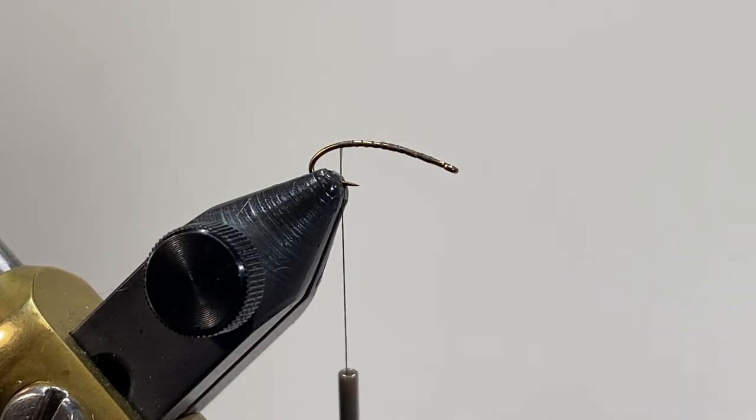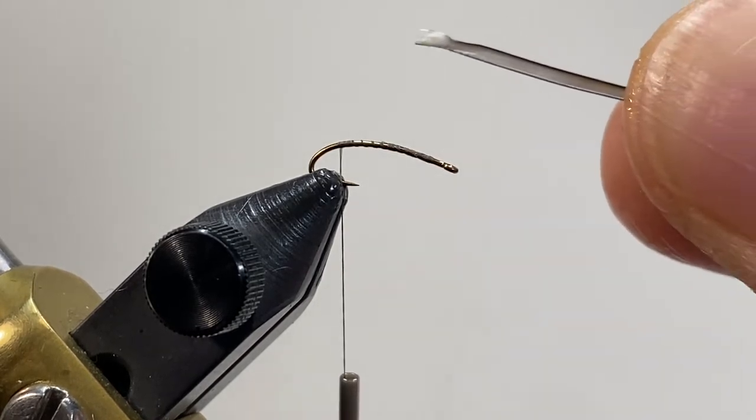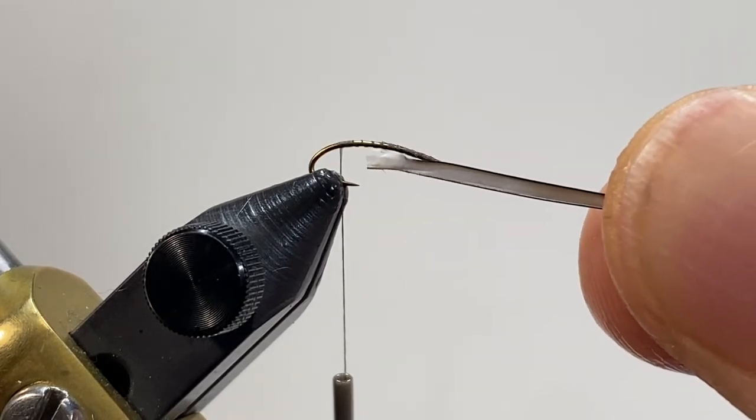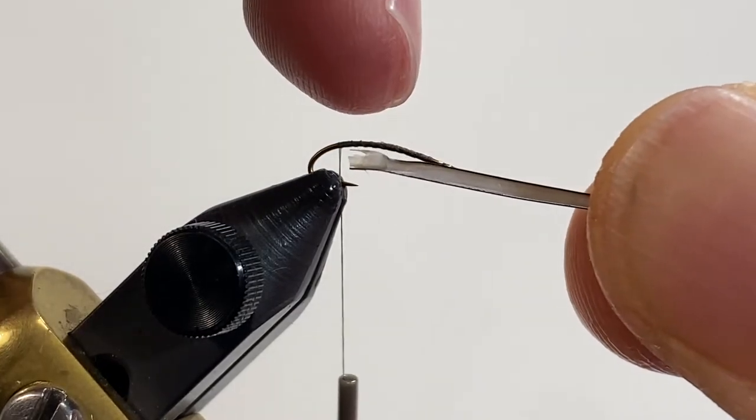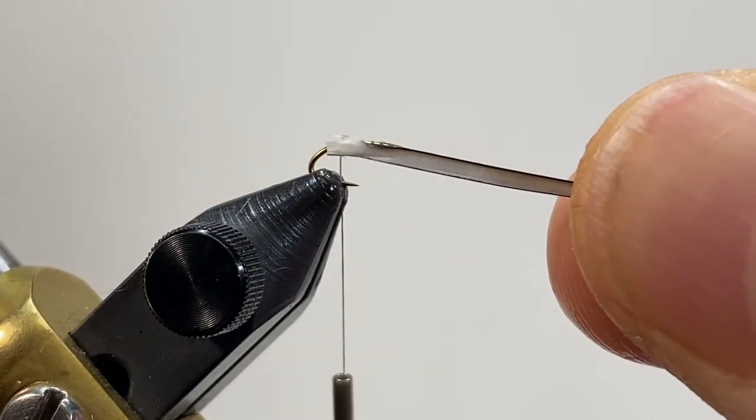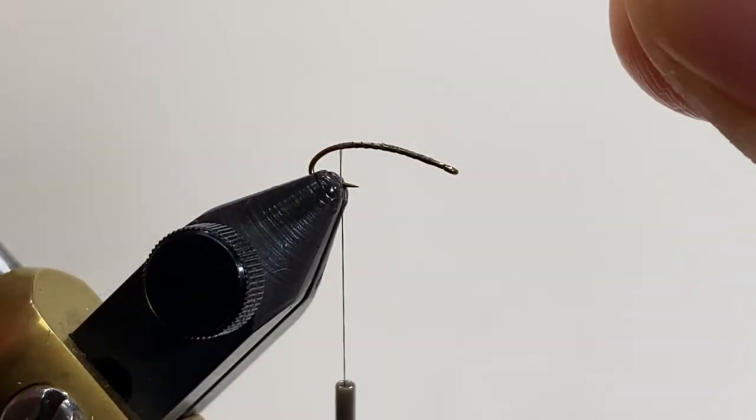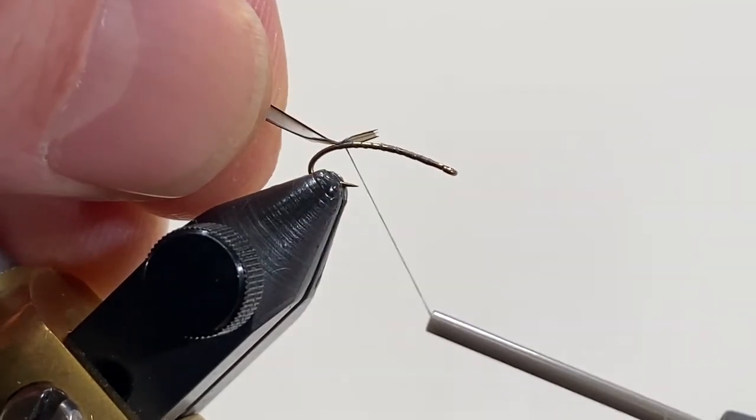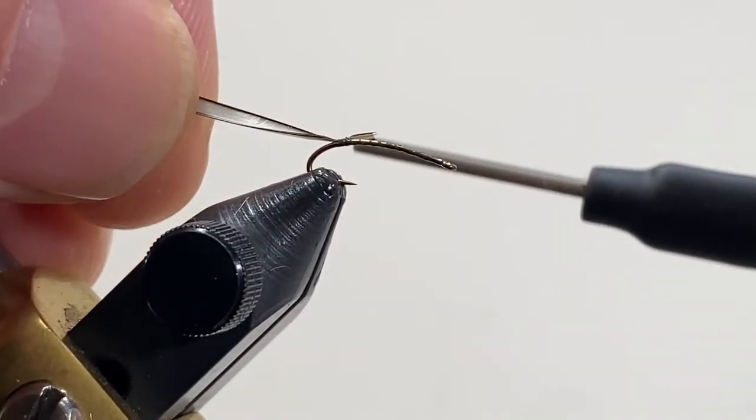We're going to use Goose Biot for the body. When we're working with Goose Biot, we'll want to tie it on the correct way. If you see a slight notch on the top, that notch needs to be away from you. If you are tying these and you see a ridge form, you've got to take it off and turn it the other direction.